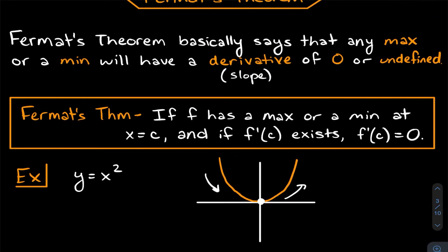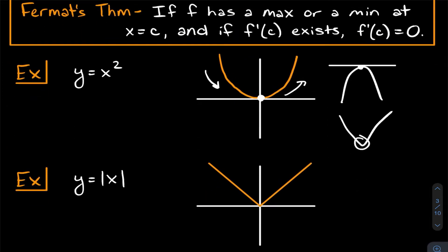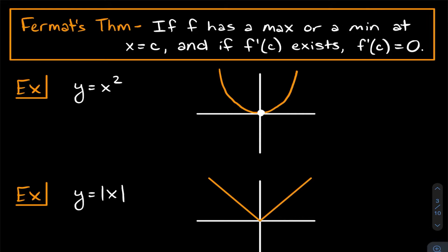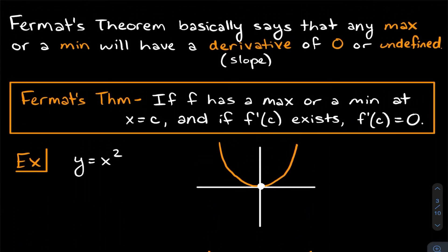To turn around from positive to negative slope — or negative to positive — you need a derivative of zero, a horizontal tangent line, or one that is undefined, like at a corner in y = |x|. More formally: if f has a max or min at x = c and the derivative exists there, then the derivative equals zero. In short, at a max or min, the derivative is zero or undefined.